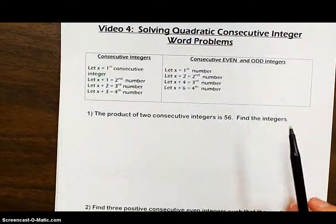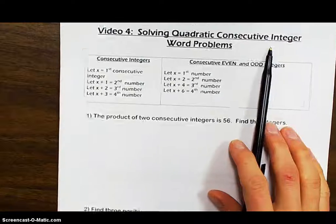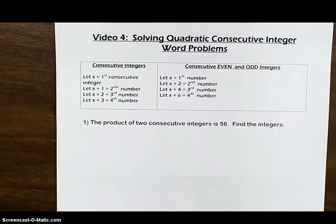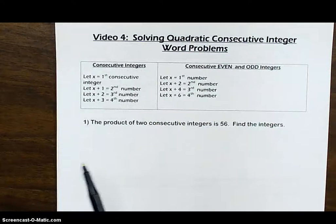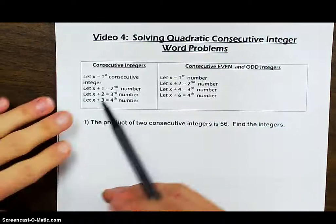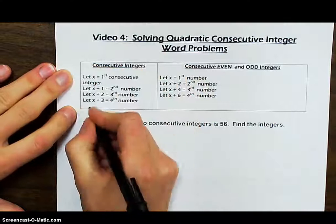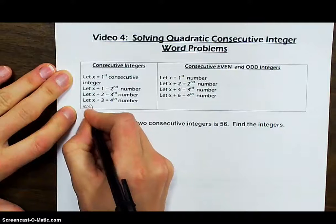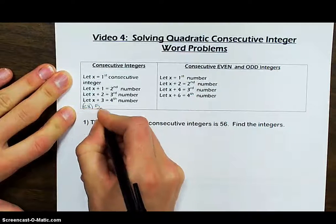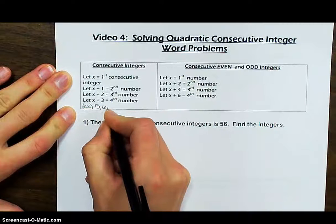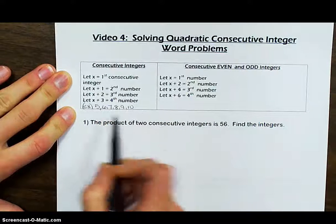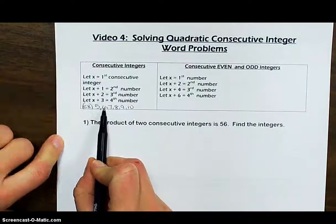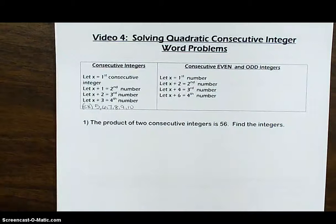The goal for today is we are going to be working with consecutive integers, which we did talk about at the beginning of the school year, so here's just a little bit of a review. A consecutive integer — these are integers that occur in order. For example, starting at five: the next consecutive integers would be six, seven, eight, nine, ten. So five would be your first, six your second, and so on.